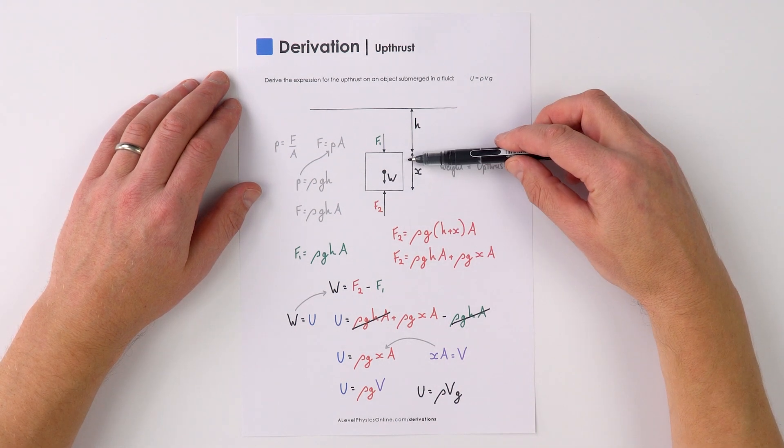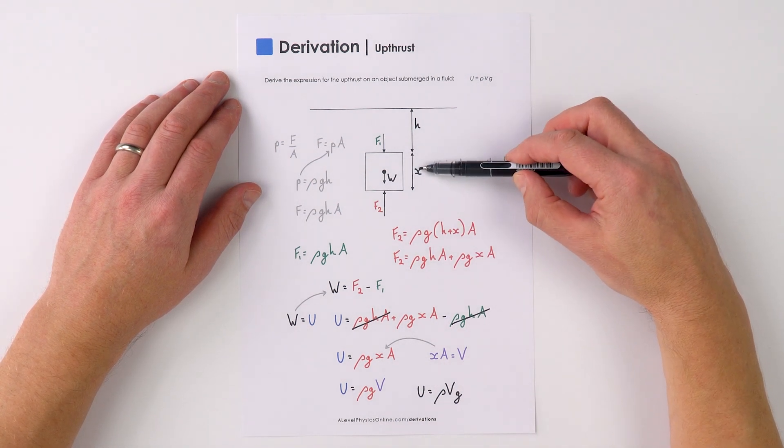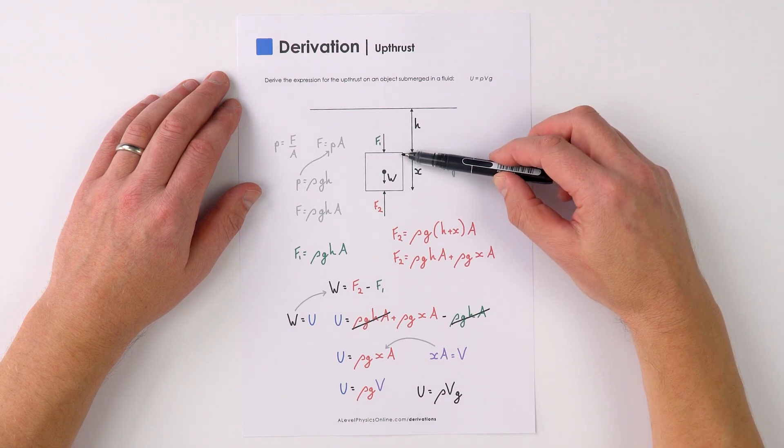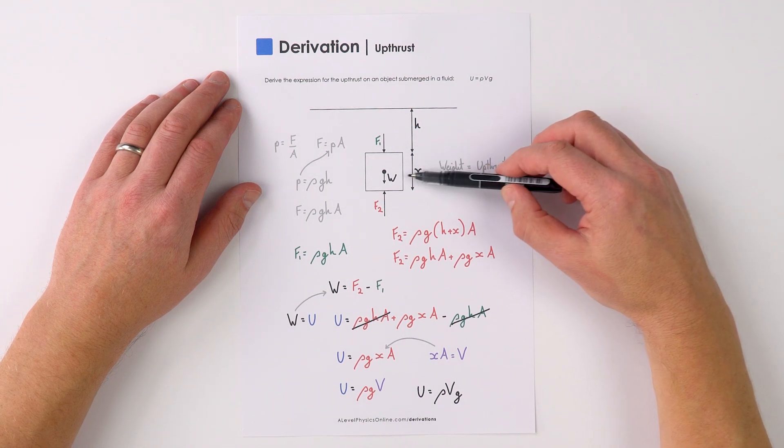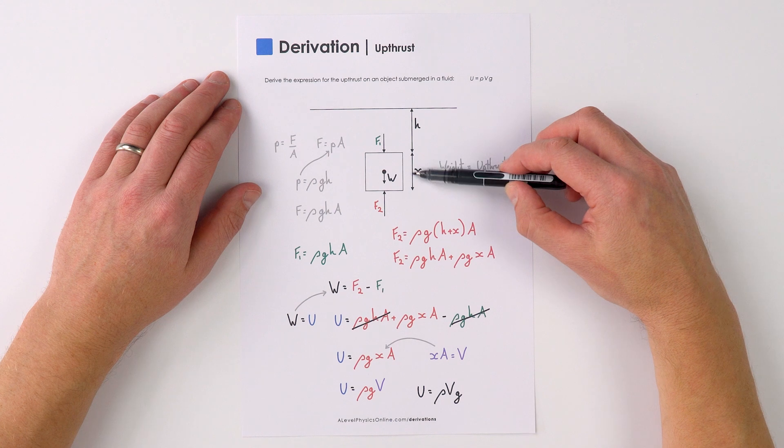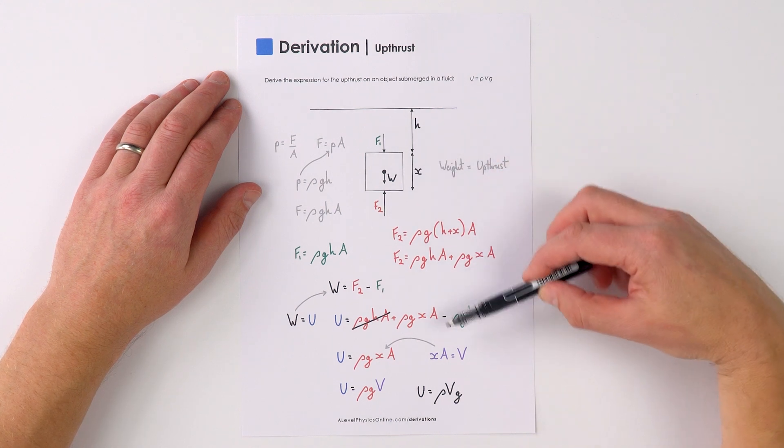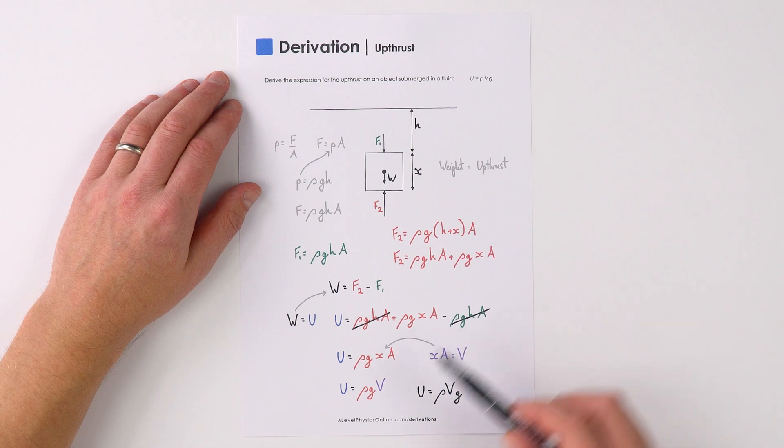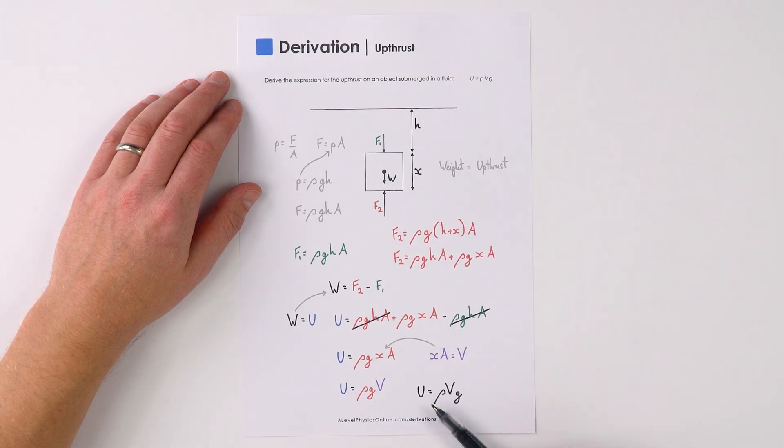Now for this object here, it's got a height or depth of x and the surface area is a, and therefore the volume is this dimension x multiplied by the area a. So that's its volume, and therefore the upthrust is equal to ρgv, or we can also say that the upthrust is equal to ρvg.